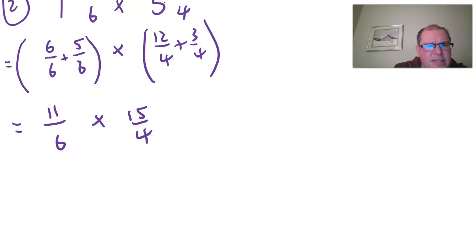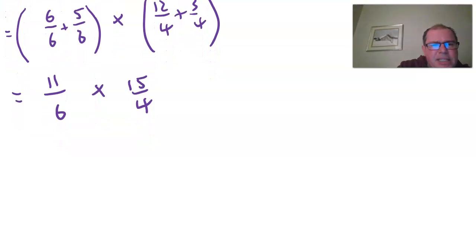Let's see if we can cancel anything. Yes we can. Three goes into six and three goes into fifteen so that will make our lives easier. So six divided by three is two and fifteen divided by three is five. I think that's it. We can't cancel anything else.